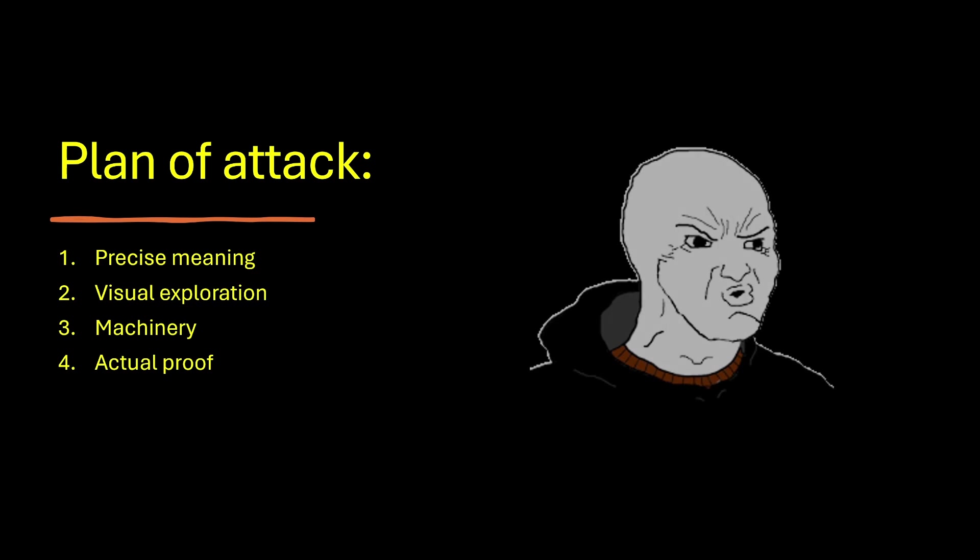So this is our plan of attack. First, we're going to assign a precise meaning to our main result. And second, to make the proof easier to understand, we will do some visual exploration using decimals. And the third part is called machinery, which is going to be rather formal and abstract. This contains the concepts and results necessary to understand our main proof. And finally, the actual proof itself. Let's go.